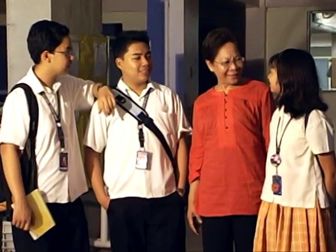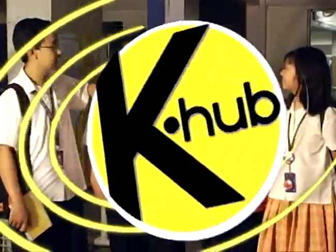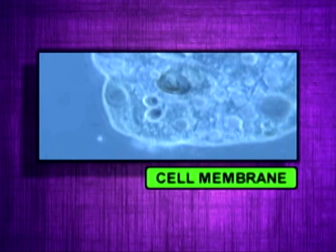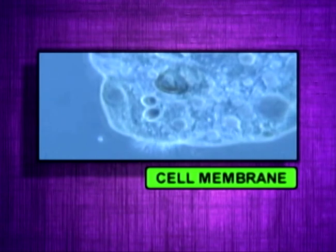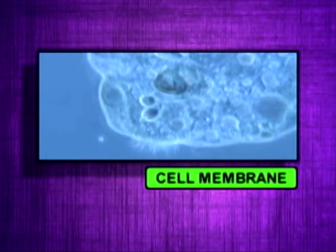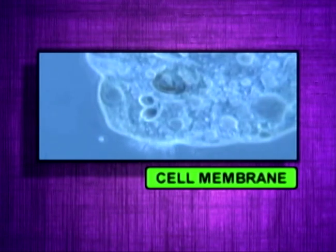Now, we will study the parts of a typical cell and the functions of these parts. All cells have at least three components. The plasma membrane, also called the cell membrane, performs the following functions.